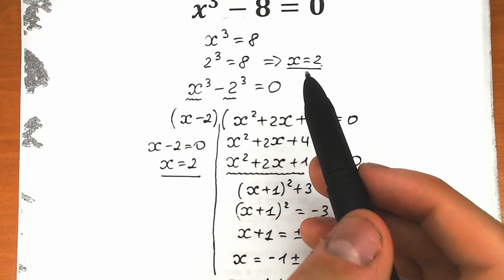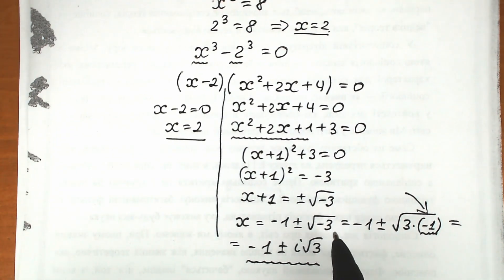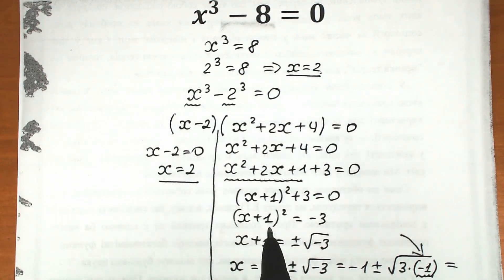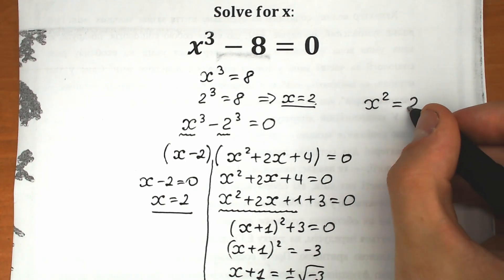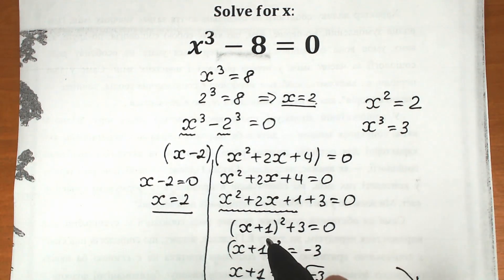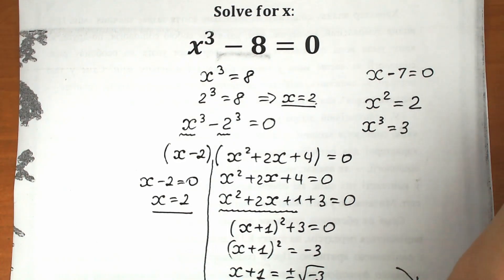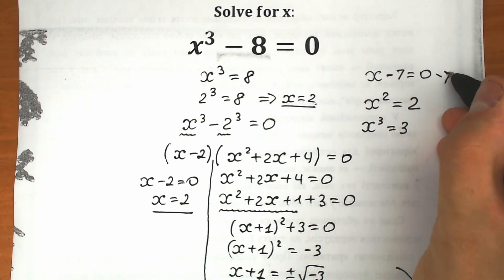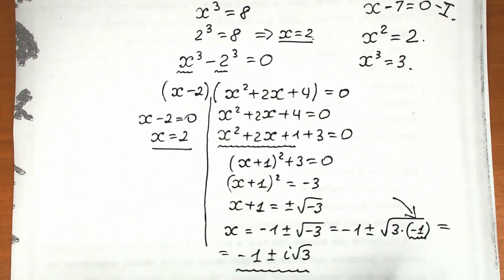A lot of students might say: I got the same x equal to 2, but what about the complex part? You can't find complex roots in your head — you need to know about the difference of cubes to find them. This is the full solution. Think about it this way: x squared means no more than two roots; x cubed means no more than three roots; and x to the first power, like x minus 7 equal to 0, means only one root. Since we have a cubic equation, we must find all three roots.